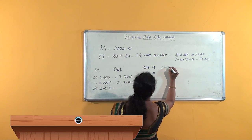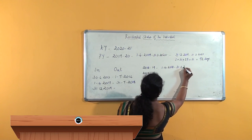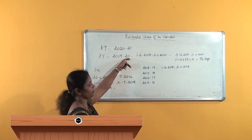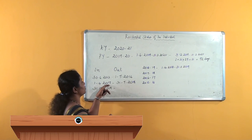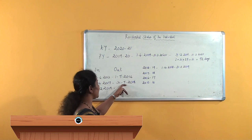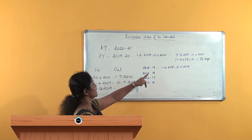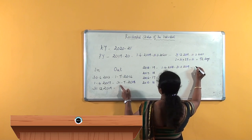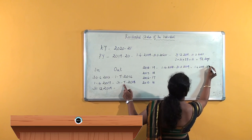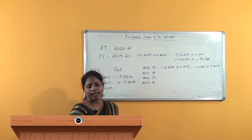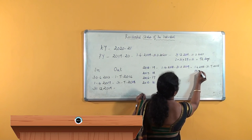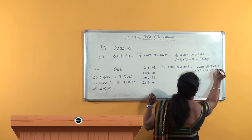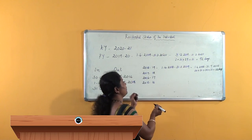The year 2018-19 commences on 1st April 2018 and ends on 31st March 2019. From the timeline, he was in India from 1st April 2017 till 31st July 2018. So in 2018-19, he was in India from 1st April 2018 till 31st July 2018 — that is April (30), May, June, July — totally 122 days he was in India. We have to see whether he was in India for 365 days, so let's see further.